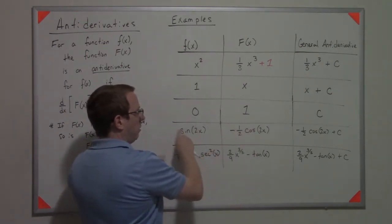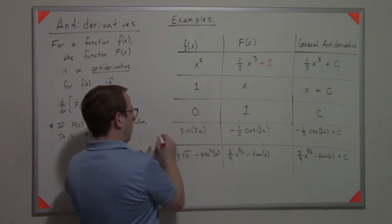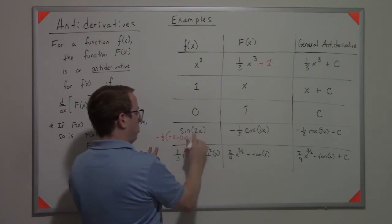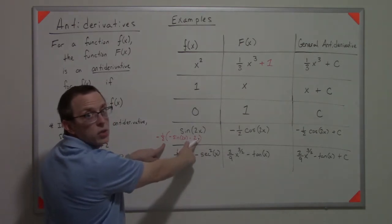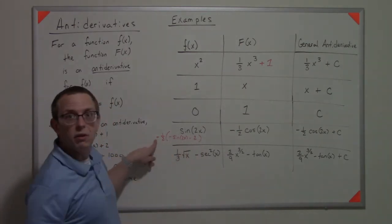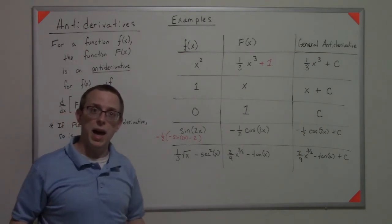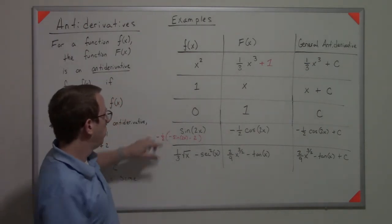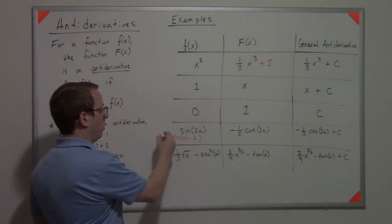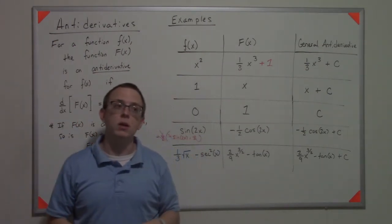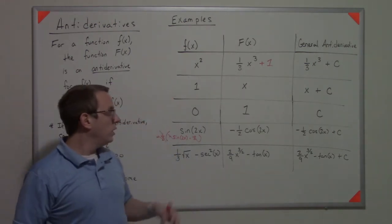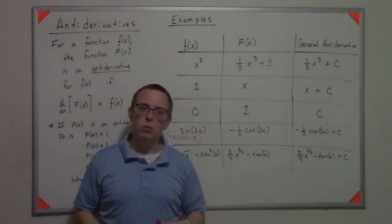When I take this thing's derivative, I get negative times negative, you get -1/2 on the outside, -sin(2x) times 2, so that the 2 and the 1/2 will cancel, the negatives will also cancel, so in doing that we get sin(2x) like we would have wanted.